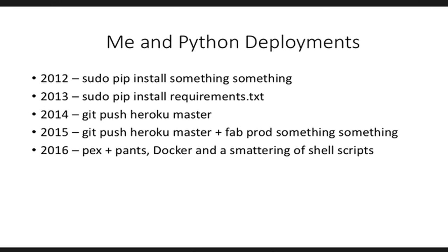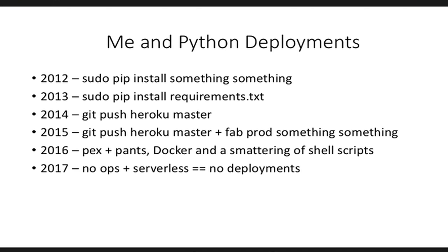Come 2016 and I joined another company where we weren't really using Fabric anymore, so I was introduced to something called Pants and Pex, and was also using Docker and a couple of shell scripts. And in 2017 we are in the era of no-ops and serverless, which obviously means that hopefully in a year from now we wouldn't have to deploy Python applications. But before we get into that glorious future, we still currently have to deploy our Python applications, so let's understand how that is done.